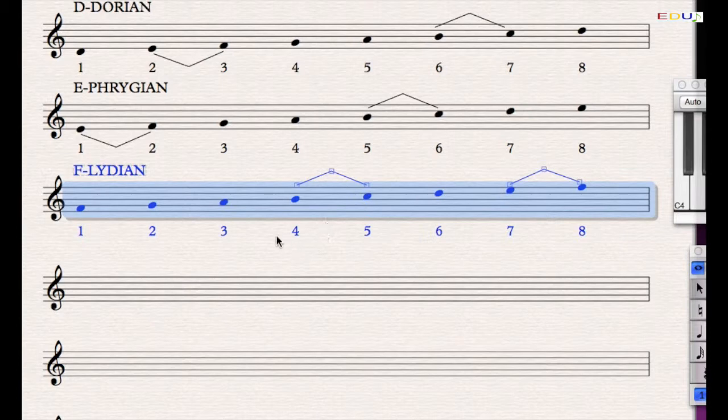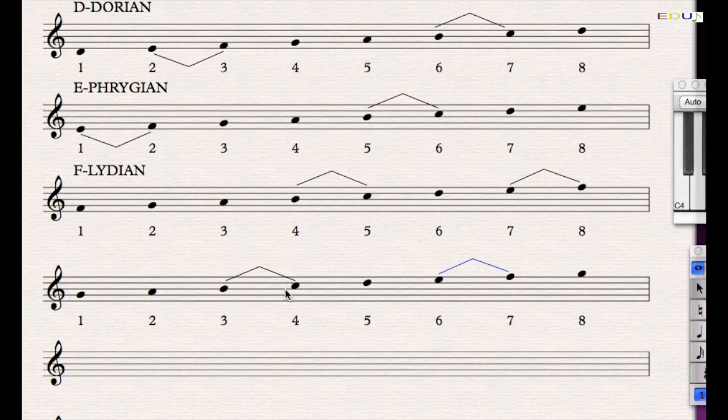Now let me shift F Lydian up and we go from G to G. And we see that we get the semitone steps between tone 3 and 4 and 6 and 7. Whenever you find this, you're dealing with a mixolydian scale. In this case, it's G mixolydian.